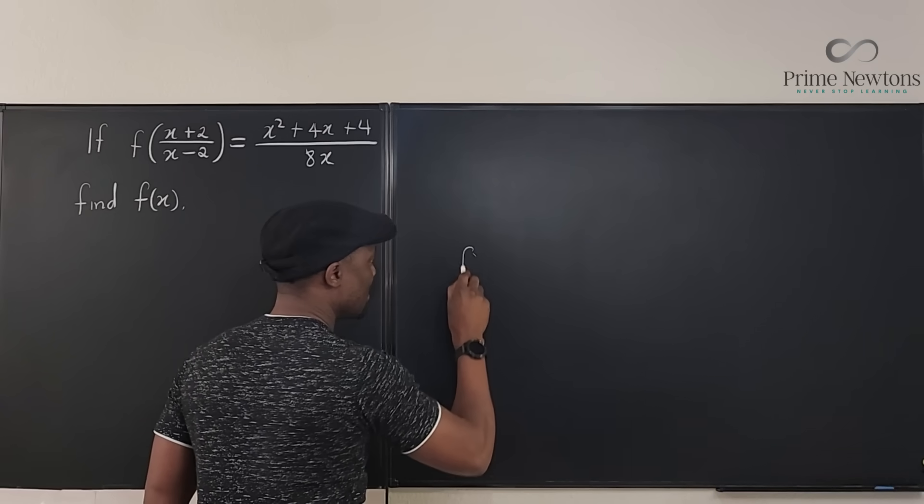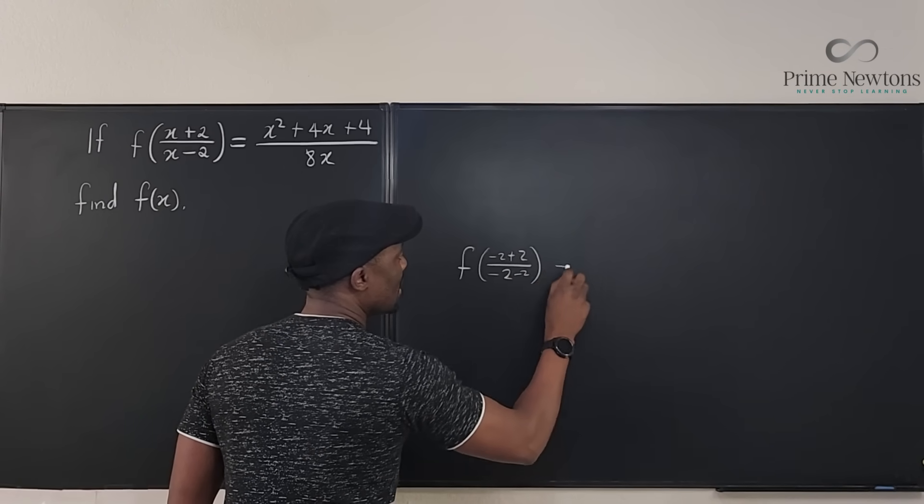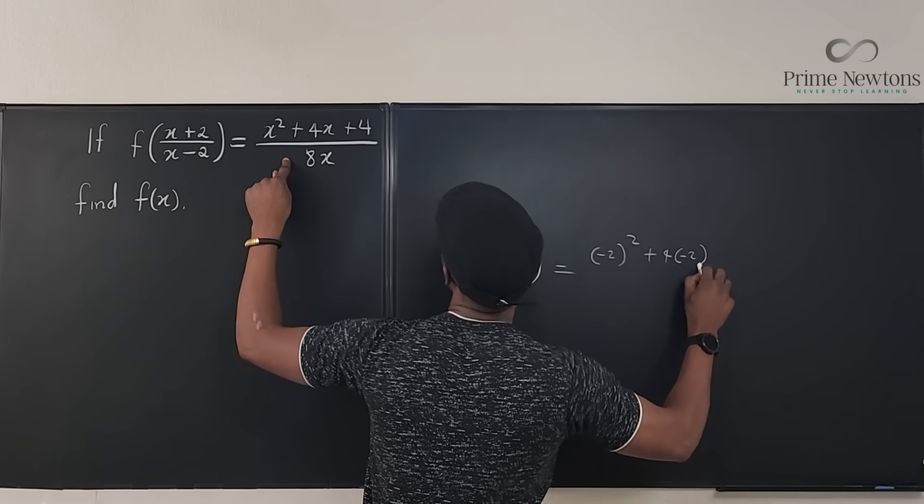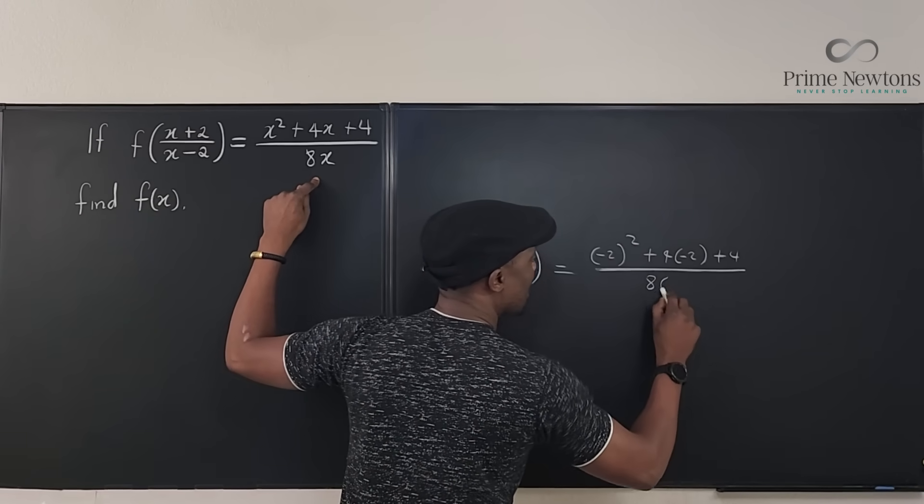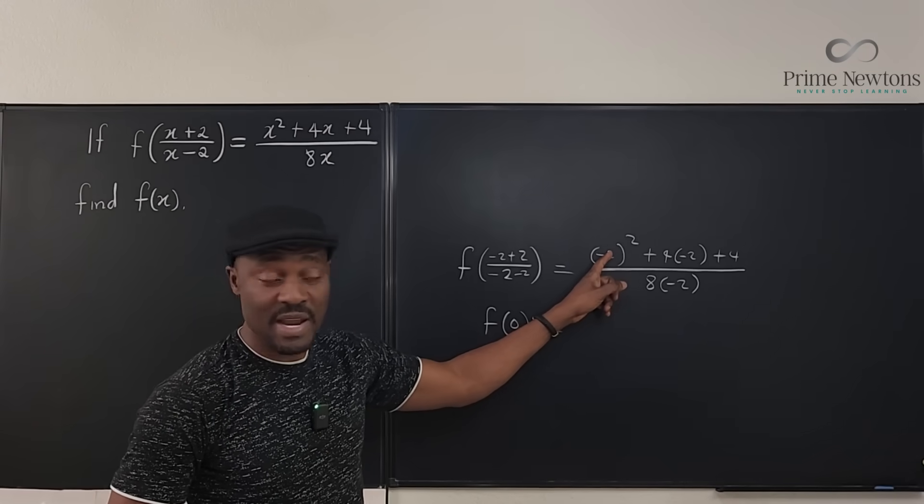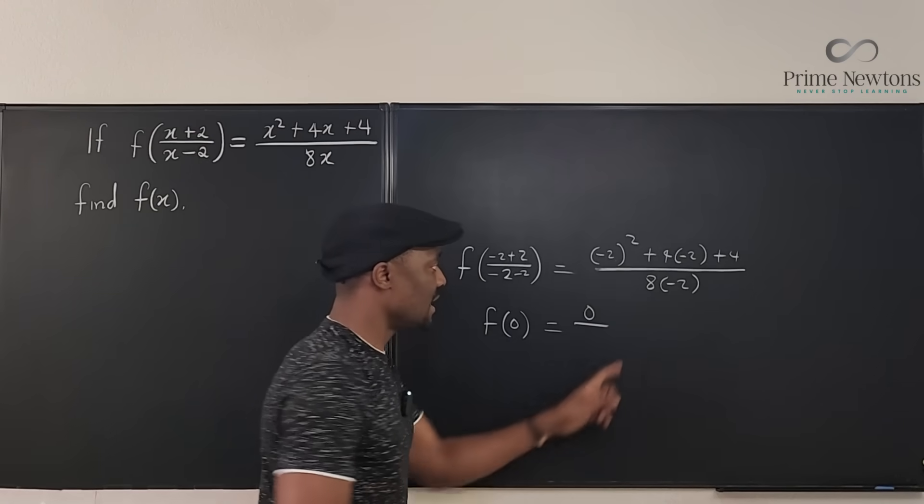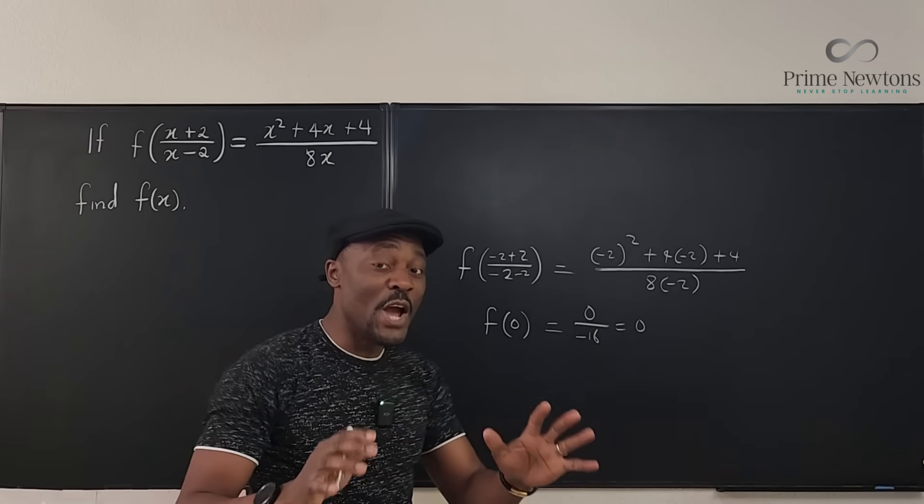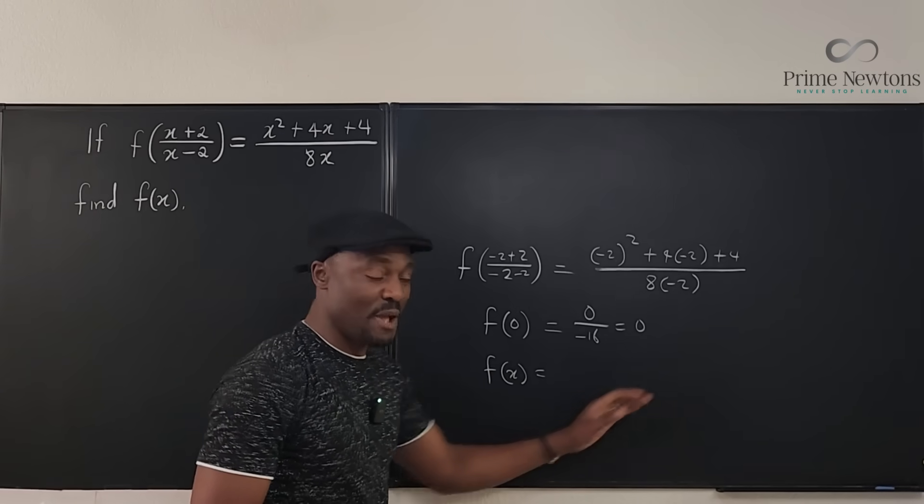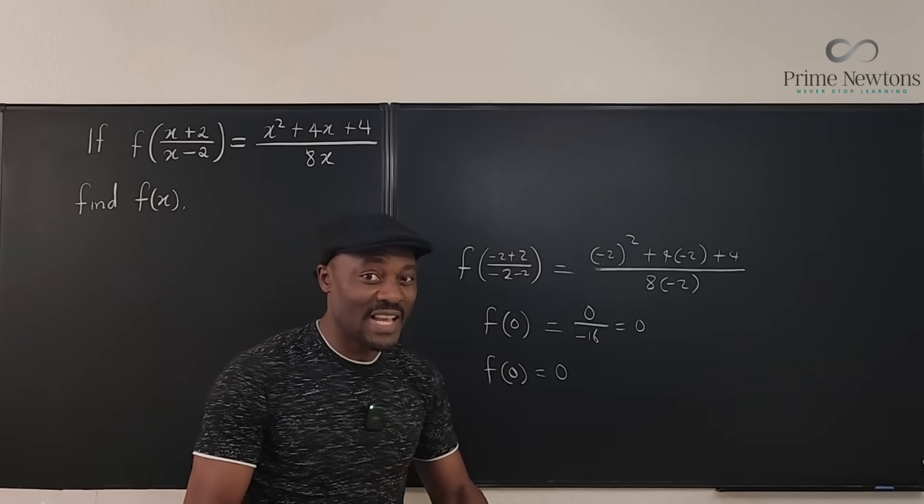So I'm going to be having, watch this, f of negative two plus two over negative two minus two. And here it's going to be negative two squared plus four times negative two plus four divided by eight times negative two. Here I know I have f of zero. And here I'm going to evaluate, I'm going to get four minus eight plus four, that gives me zero on top. And down here it's negative 16. So equals zero. So I know that by the time I get my final answer, I'm going to have f of x equals something, but when I plug in zero in that function I'm going to get zero. That's a quick test for me to know that this function I just claimed I got may be true.